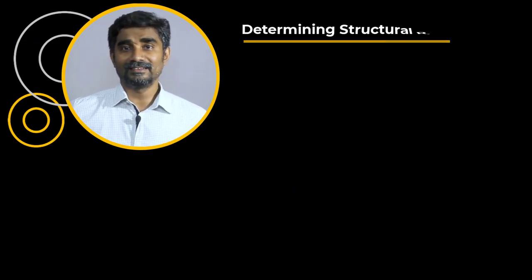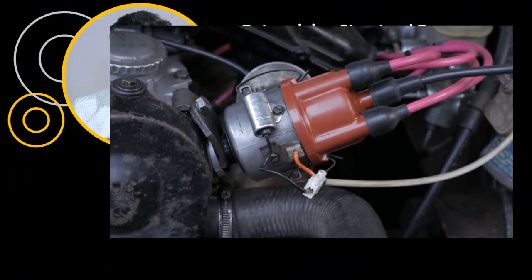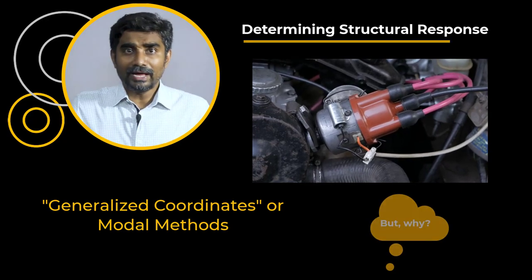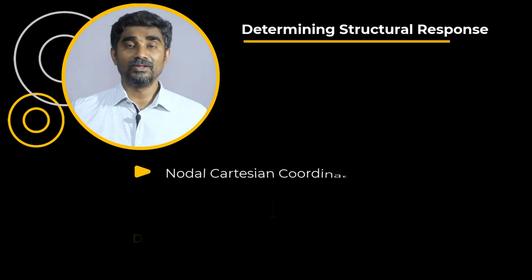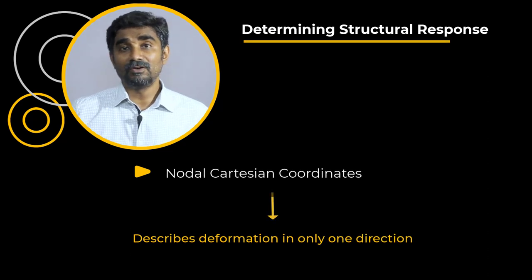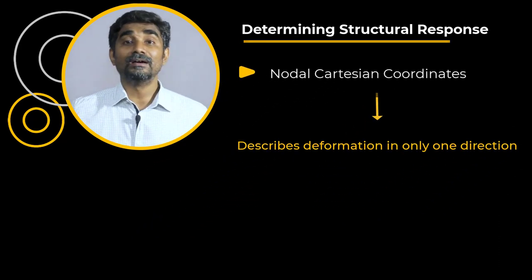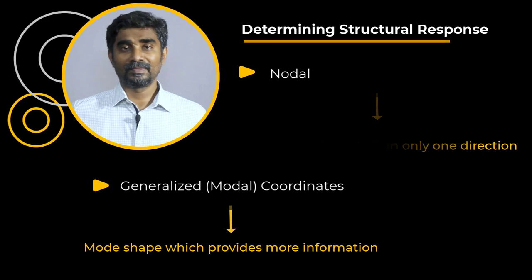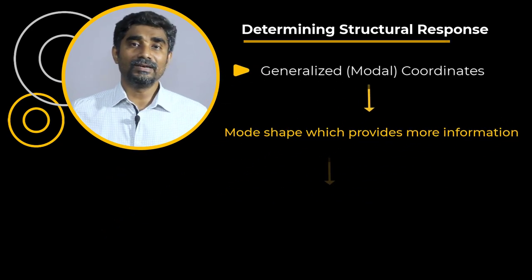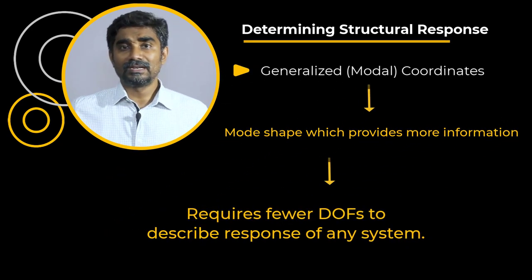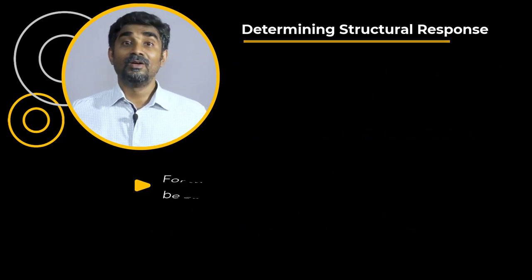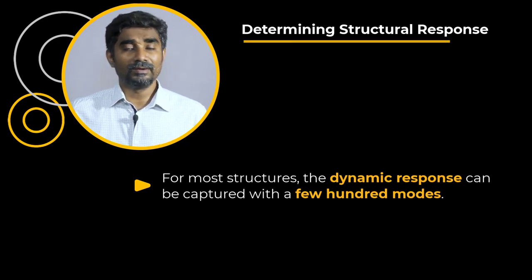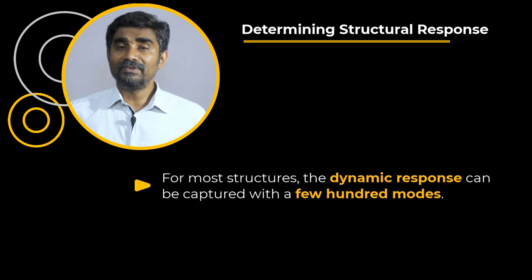While determining the structural response of any linear system, the use of generalized coordinates or modal methods is attractive. Because a traditional displacement DOF describes the deformation of a node in only one direction, while a generalized coordinate DOF is a mode shape which provides more information. Thus, by using generalized coordinates, we require fewer DOFs to describe the response of any system. For most structures, the dynamic response can be captured with a few hundred modes or less, leading to an efficient solution.